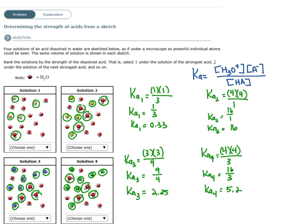Okay, so let's start ranking these. The larger the KA value, the stronger the acid. So that makes solution two as number one. And then solution four as number two. And solution three as number three. And solution one as number four.